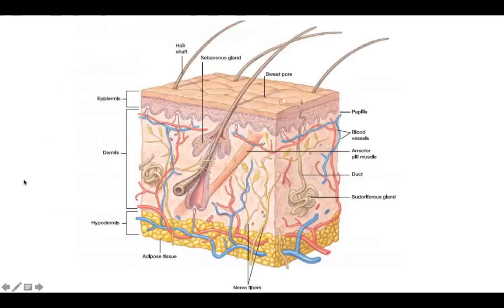Here we can see a cross-section of the skin. This is the epidermis — you can see the squamous cells and different layers. This thicker portion is the dermis, and you can see blood vessels, hair follicles, and different types of muscles, as well as nerve endings. Then there is the hypodermis, which contains loose connective tissues and adipose tissues that store fat.